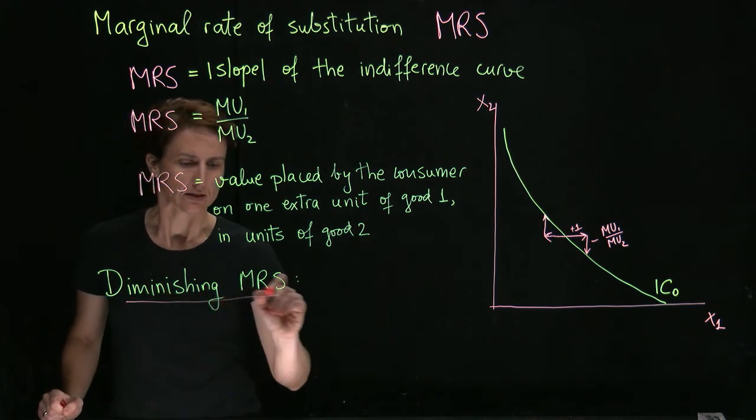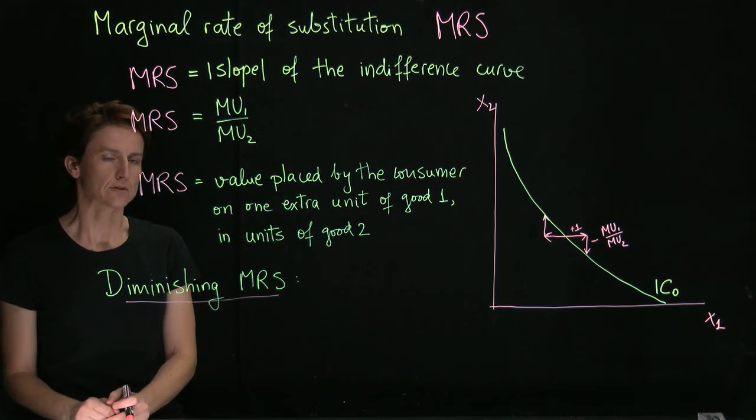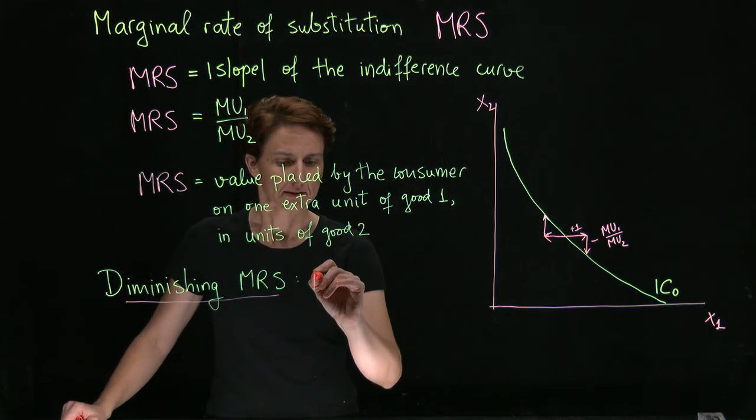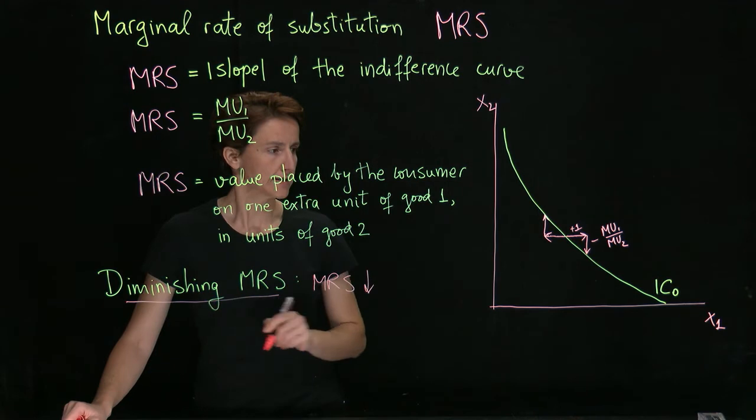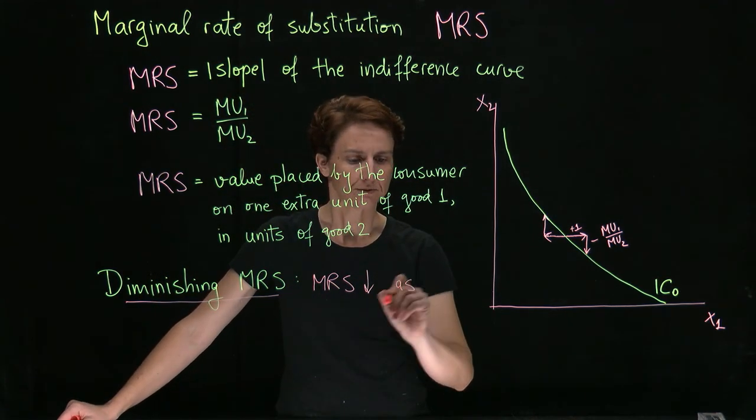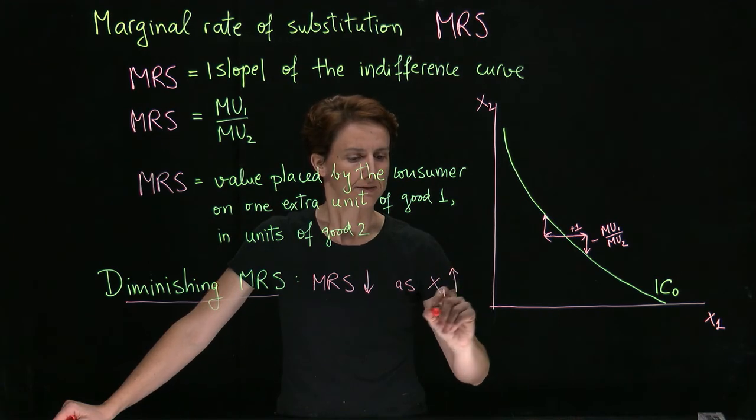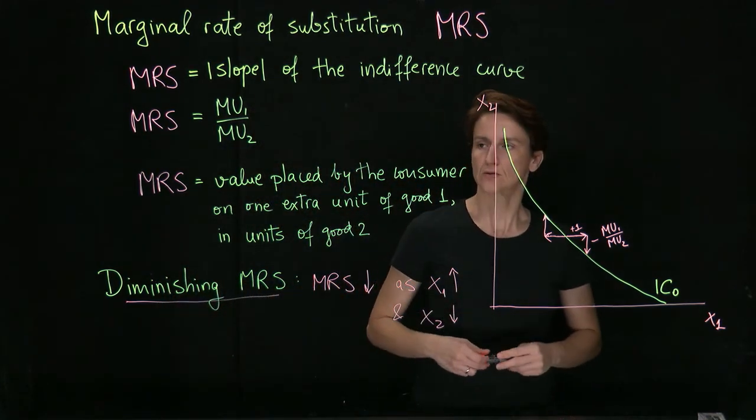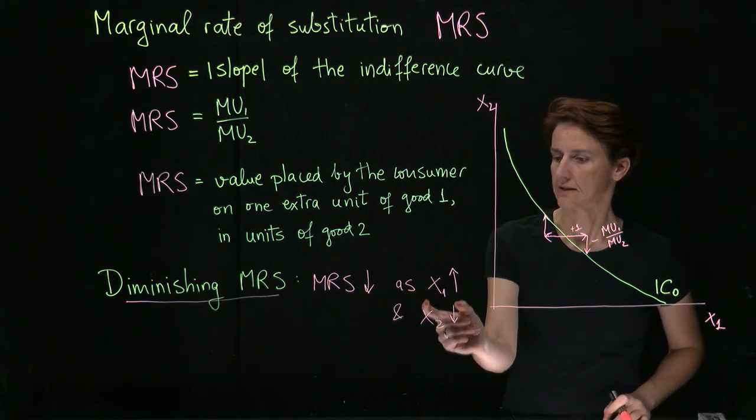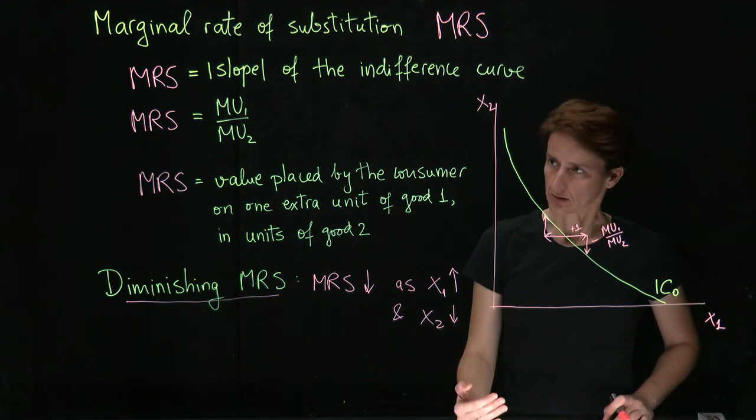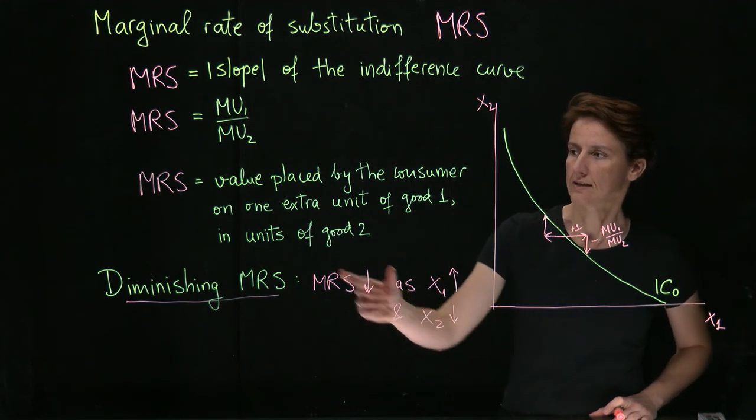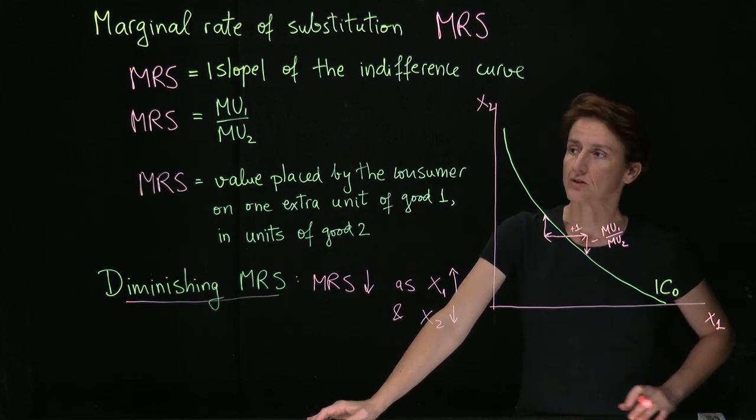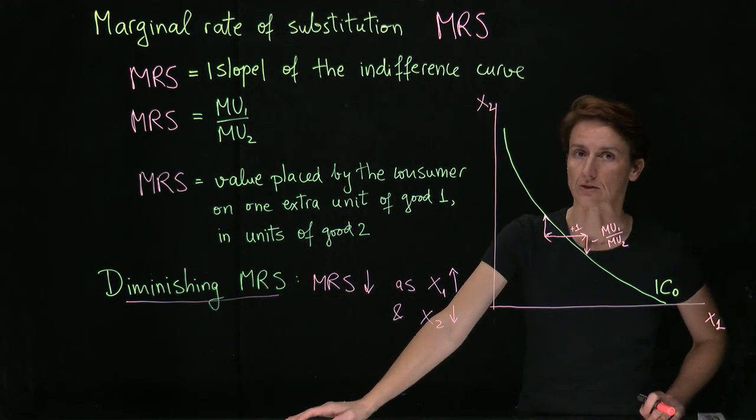Now, we have a property analogous to diminishing marginal utility from when we were talking about utility of a single good. And that is diminishing marginal rate of substitution. What this says is that MRS, so the slope, decreases as we move along an indifference curve towards more of good 1 and less of good 2. Okay, so let's stop for a second to see what that means. It means that as you have more of good 1 and less of good 2, you will place a lower extra value on one more unit of good 1 in terms of good 2. You can see how this is analogous to diminishing marginal utility. And in fact, if we have diminishing marginal utility of both goods, we also have diminishing marginal rate of substitution.